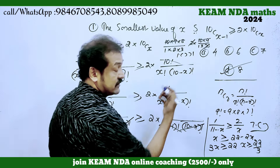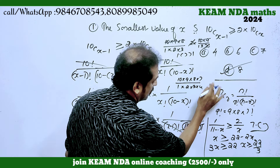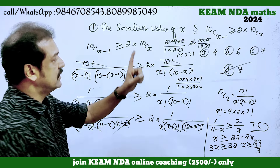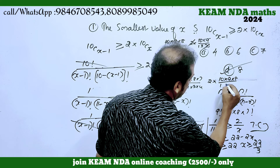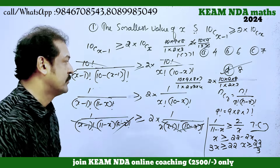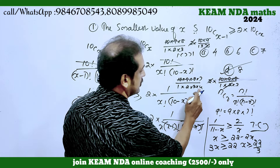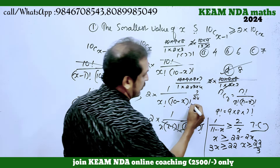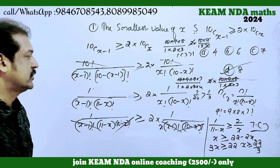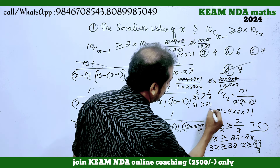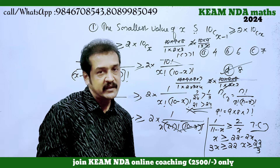Now checking x equals 7: the left-hand side is 10C6, which is 10 into 9 into 8 into 7 divided by 1 into 2 into 3 into 4, giving 210. The right-hand side is 2 into 10C7, giving 7 by 24 versus 1 by 3. Since 7 by 24 is less than 1 by 3, the inequality is not satisfied for x equals 7. Therefore the final answer is confirmed as 8.